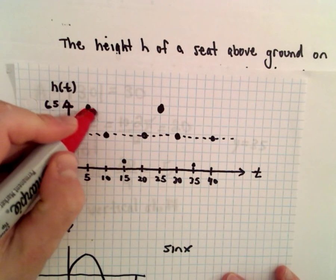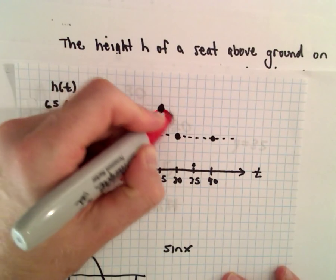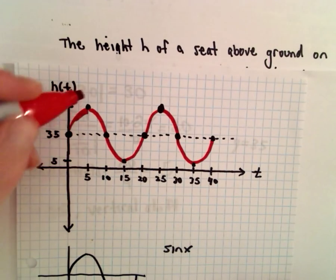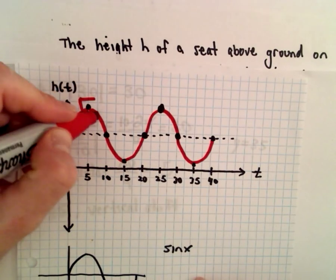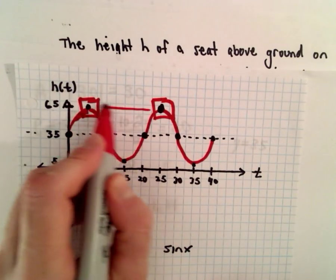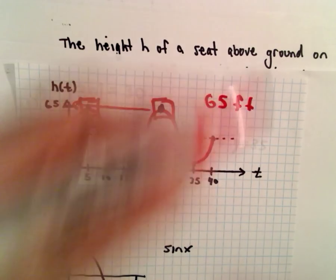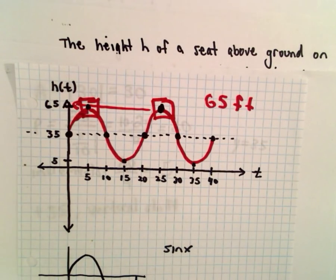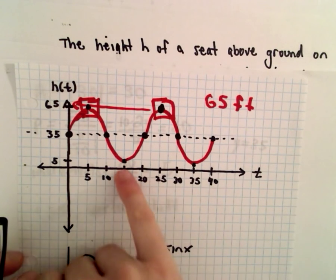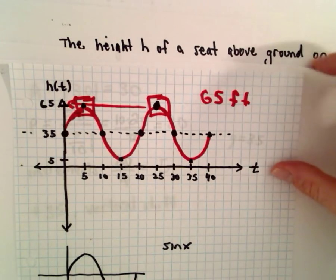Two periods of that function describe the height on the ferris wheel. It's easy to see that the maximum height is going to be 65 feet. They didn't ask for it, but the closest you'll get to the ground on the ferris wheel will be 5 feet.